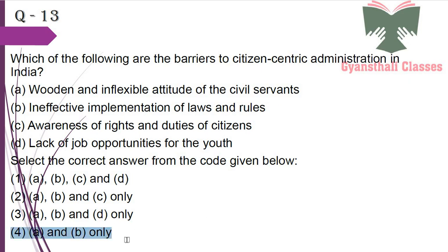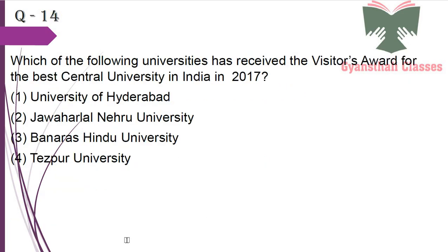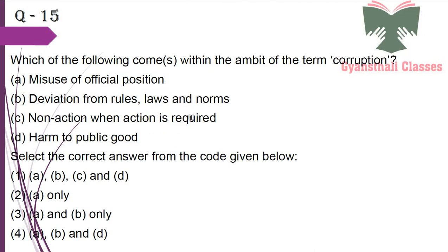Next question: Which of the following universities received the Visitor's Award for the best central university in India in 2017? It is Jawaharlal Nehru University, JNU. Next question: Which of the following comes within the ambit of the term corruption? Misuse of official position — yes; deviation from rules, laws and norms — yes; non-action when action is required — yes; harm to public good — yes. So the answer is A, B, C and D.